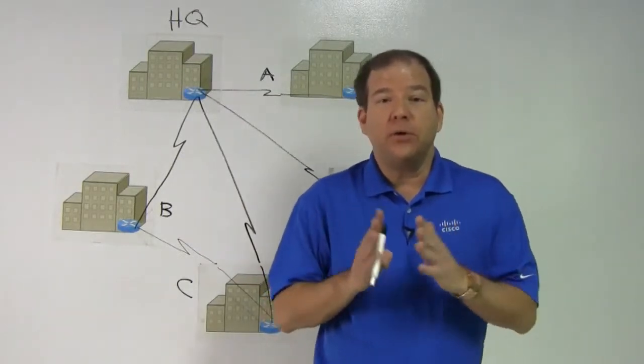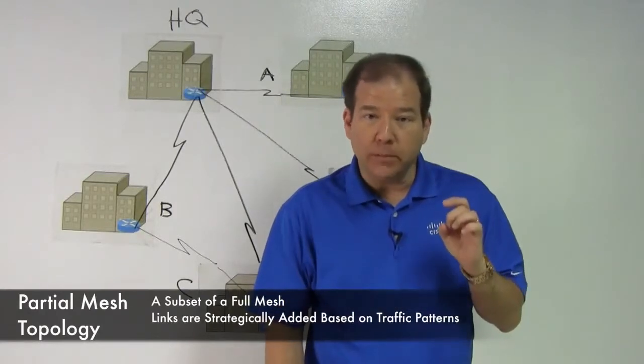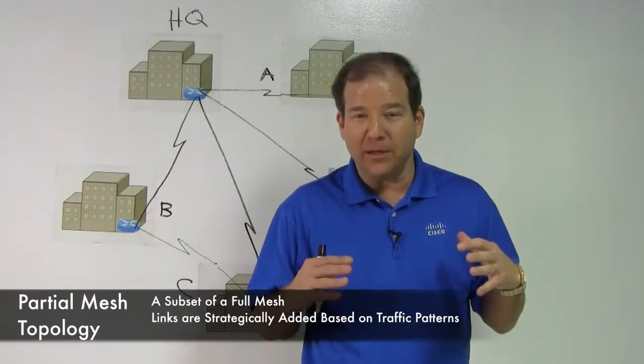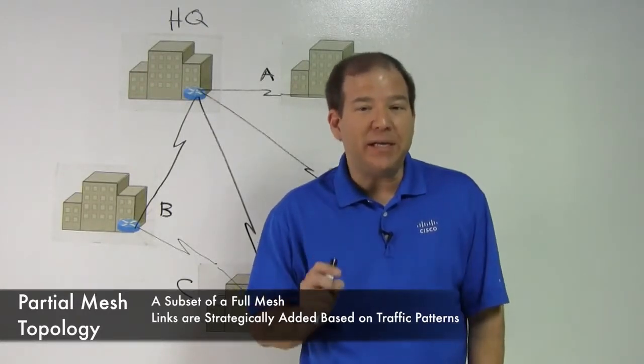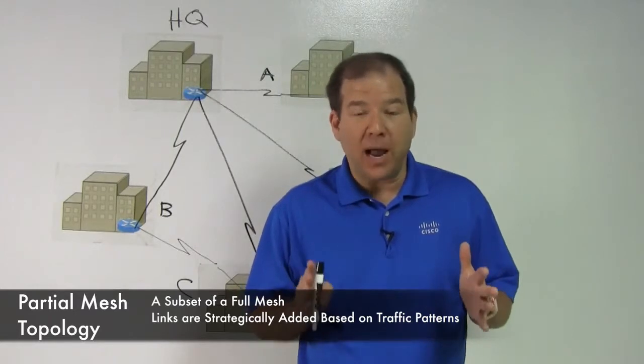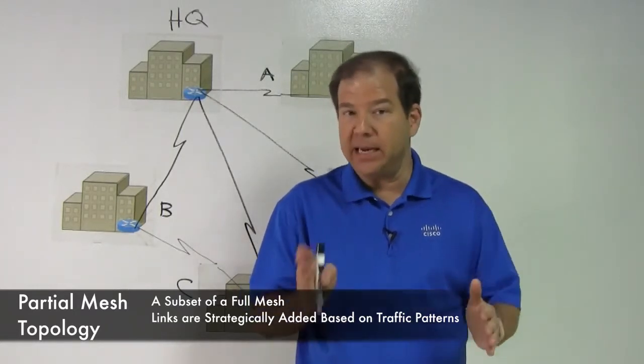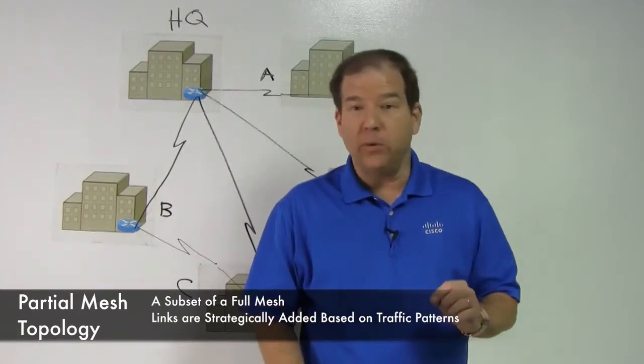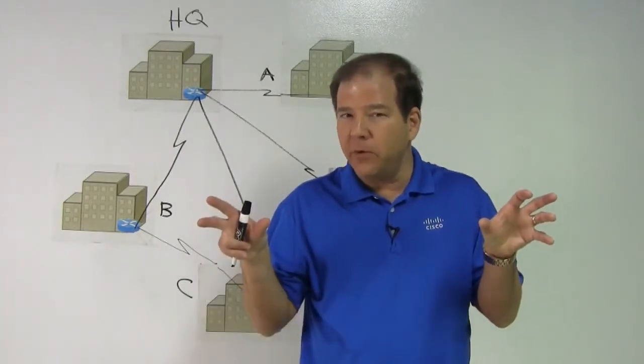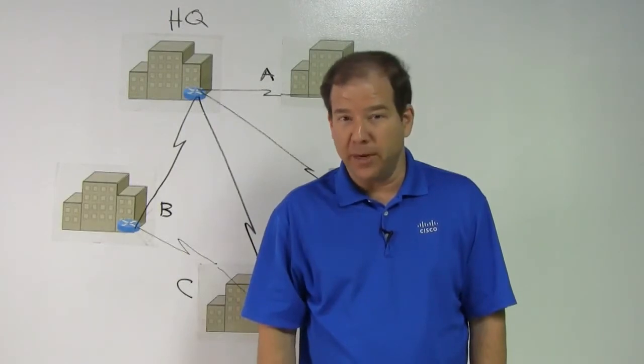What we've done is created a partial mesh. A partial mesh is a subset of a full mesh where we have strategically placed links where they're most needed. Based on traffic patterns, we've justified adding links here and here and here, but we don't need links here and here and here. So between a hub and spoke and a full mesh, we can have a strategically designed partial mesh.